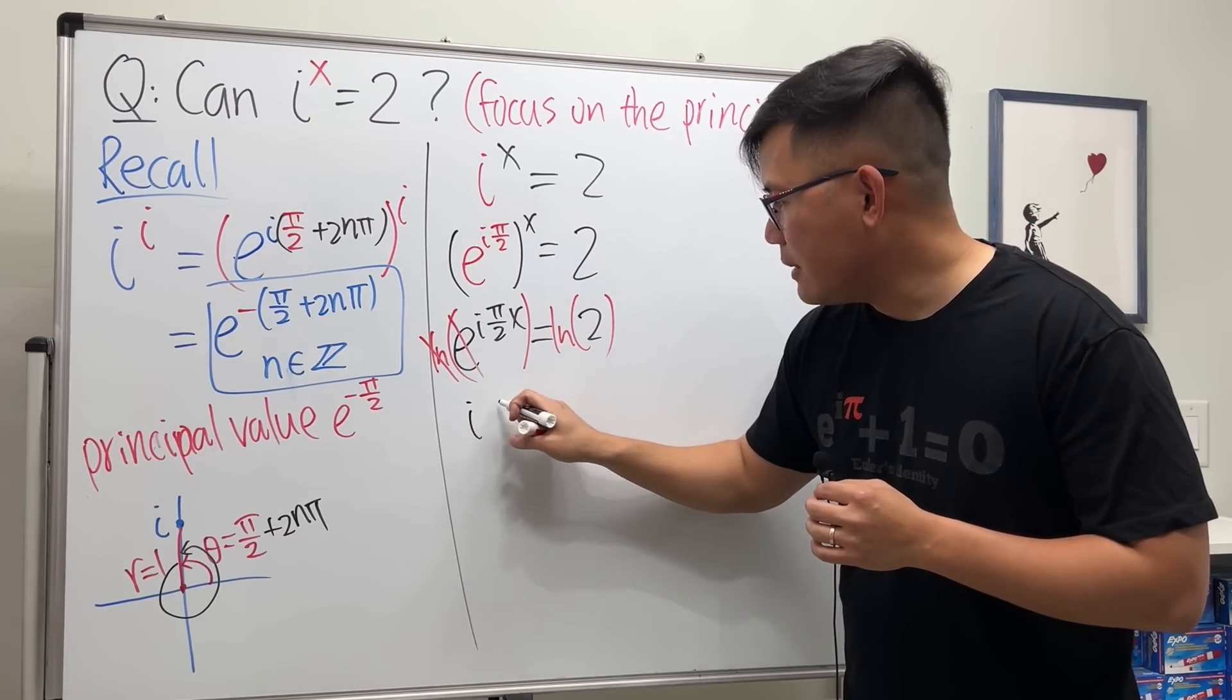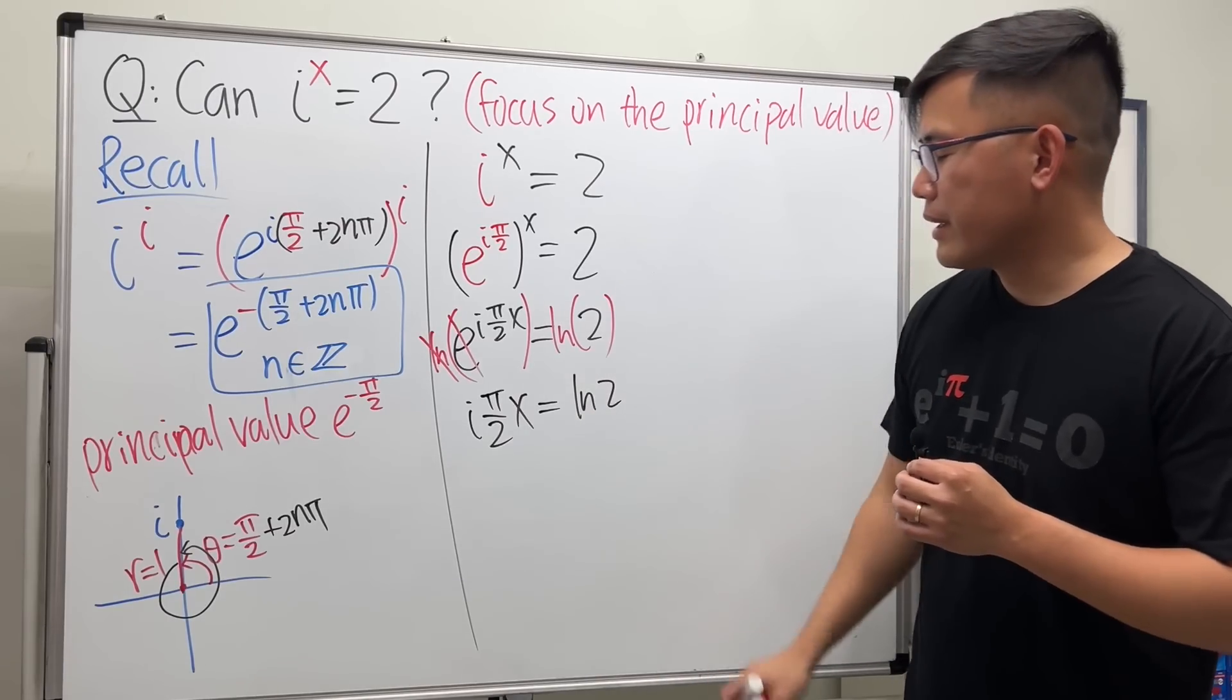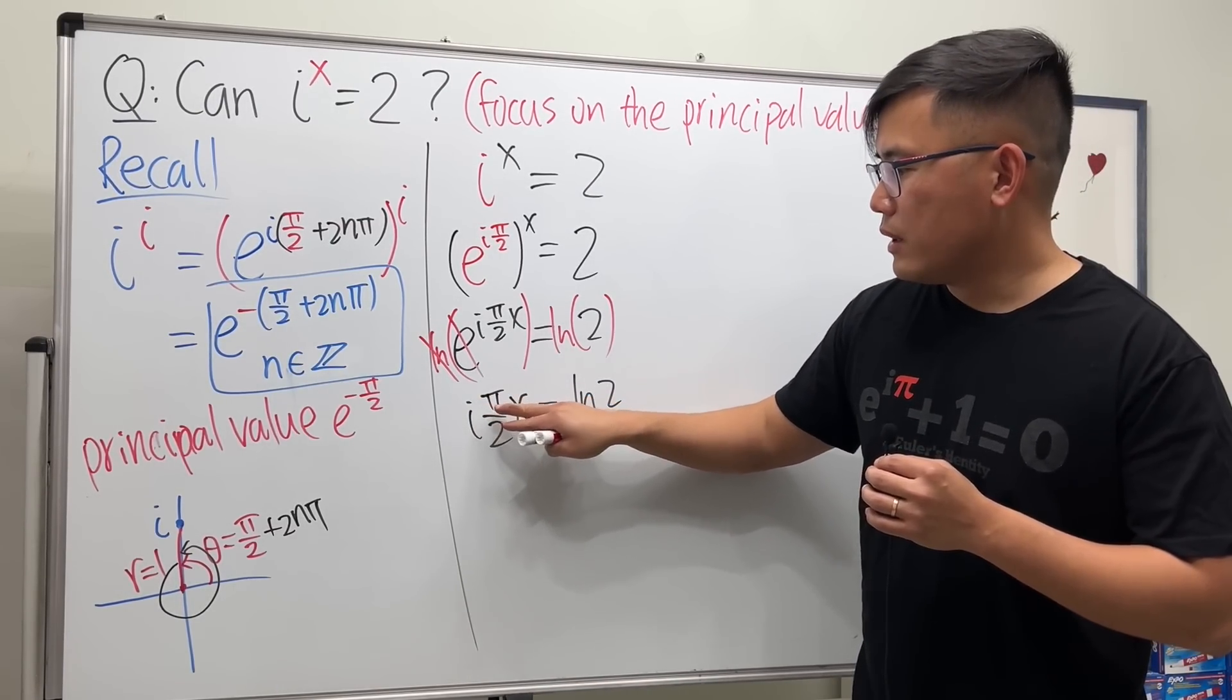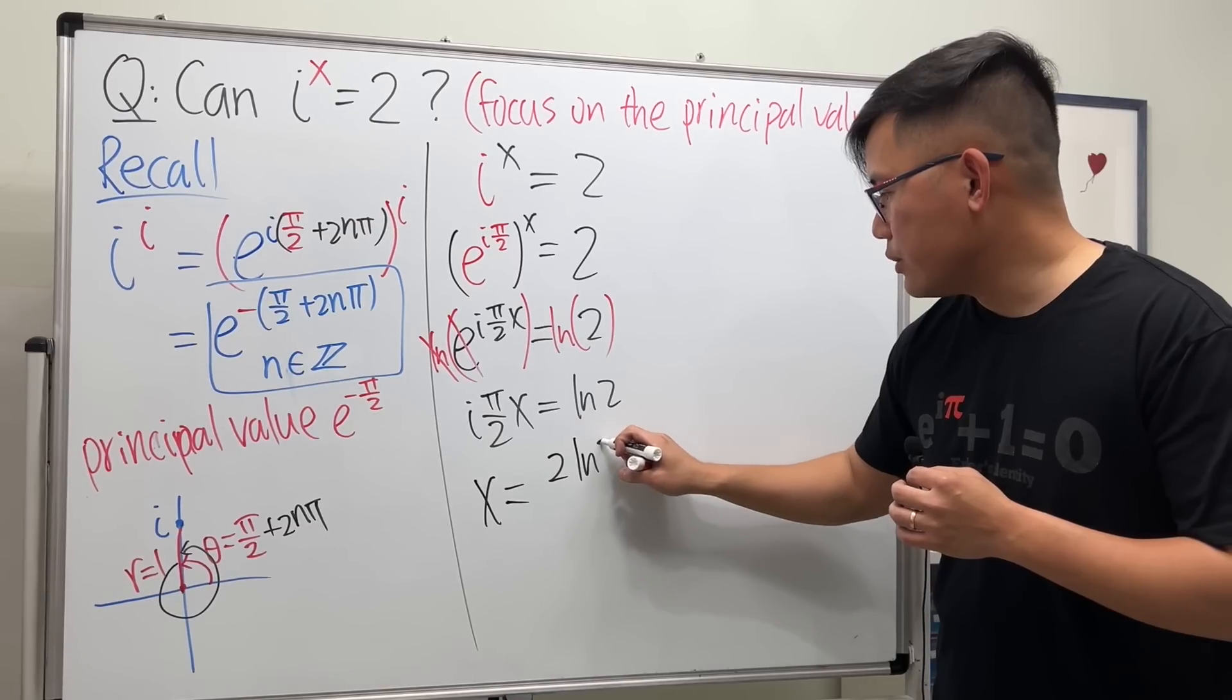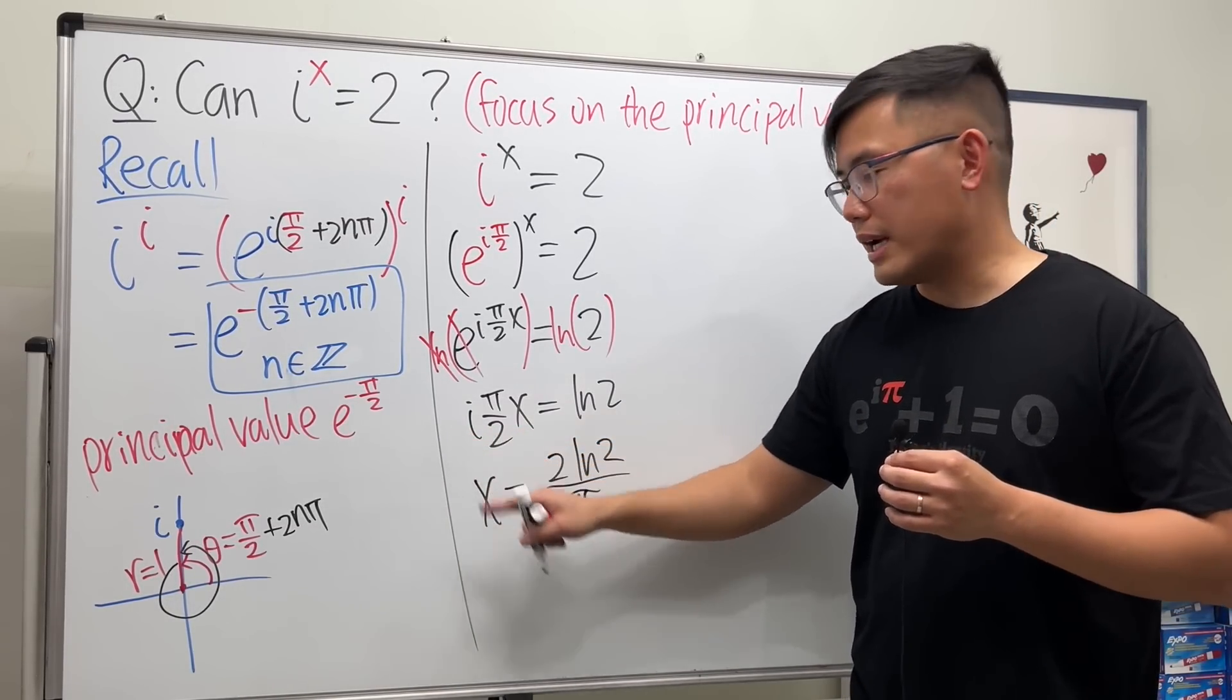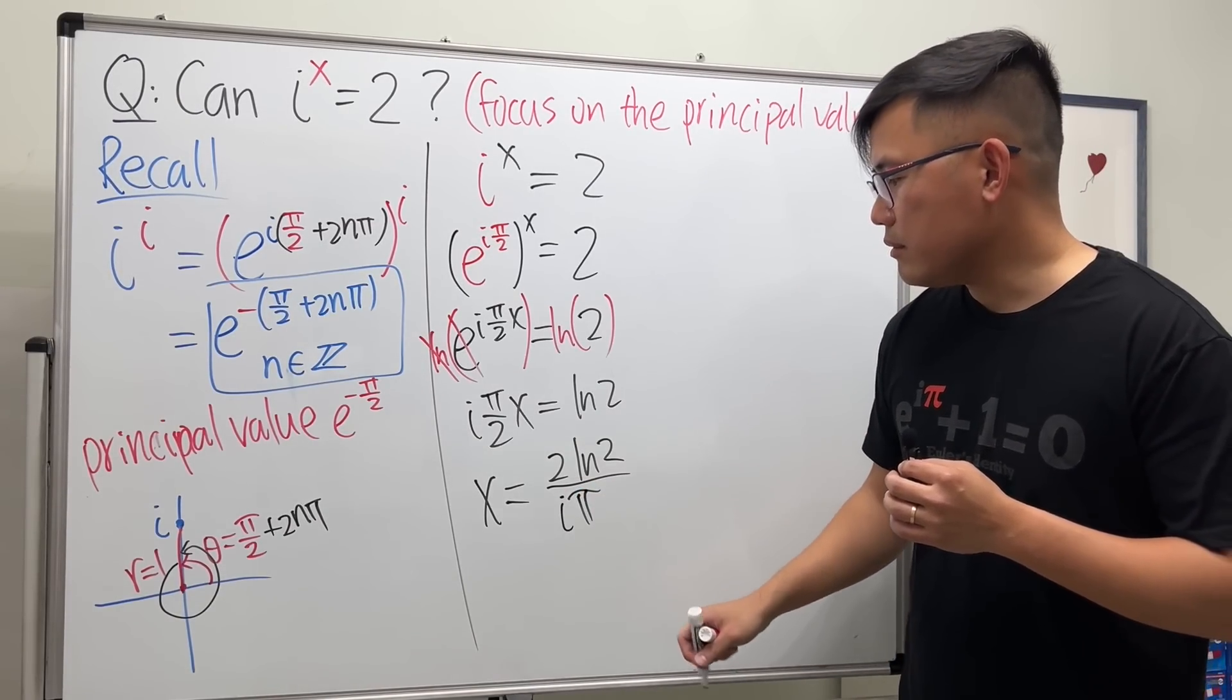And just the principal value, so you don't need to add whatever other stuff. So we have iπ over 2x equals ln 2. Now I'm going to multiply the reciprocal of π over 2, so we have 2 over π. So you get x equals 2 ln 2 over π.